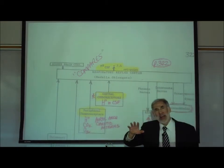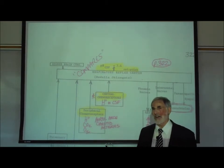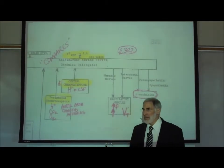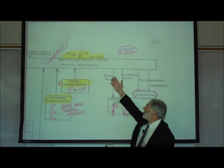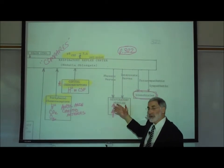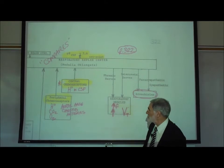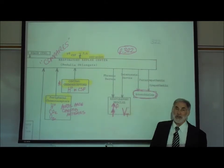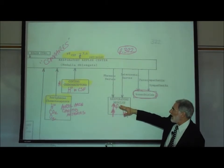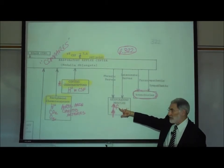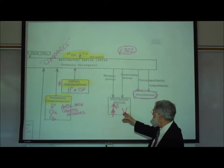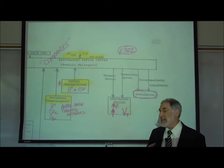The effectors that the respiratory reflex center controls include the phrenic nerves to the diaphragm muscle and the intercostal nerves to the intercostal muscles. The somatic motor neurons inside these nerves can speed up both the frequency of breathing — the respiratory rate — and increase the tidal volume, which is the depth of breathing.